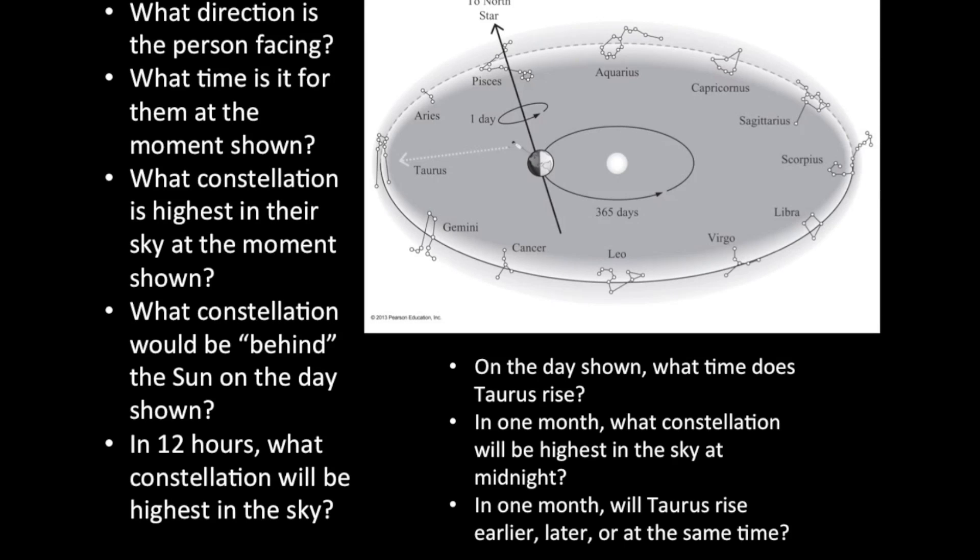Which means, one month later than the time that's shown in this particular diagram, will Taurus rise earlier, later, or at the same time? Well, for Gemini to be highest in the sky in one month, Taurus will have to be a little further on in the sky. It will have to be more west than Gemini.